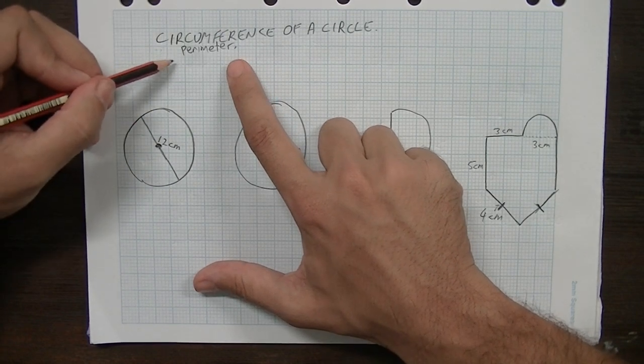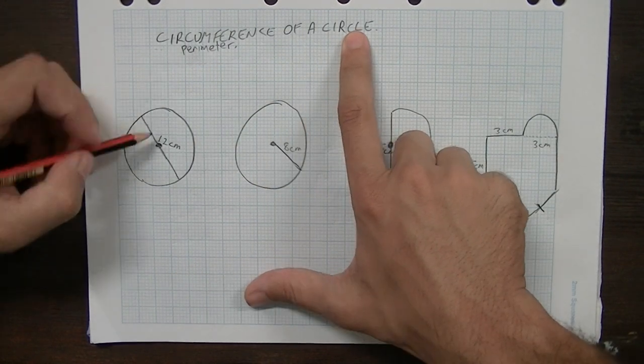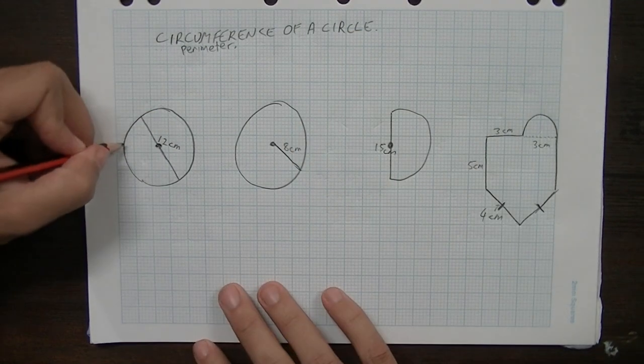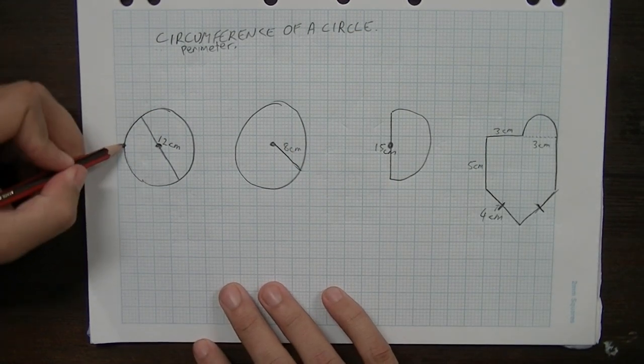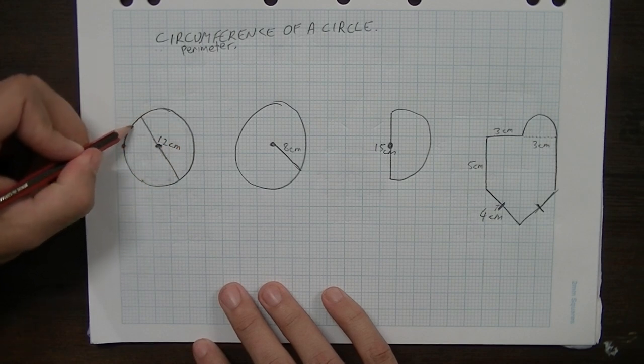So if you ask for the circumference of a circle, really we're just asking you for the perimeter of a circle, which is the distance around the circle. So if we started from a single point, how far would we need to go to walk all the way around that shape?